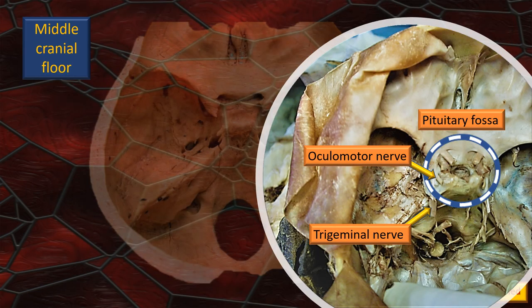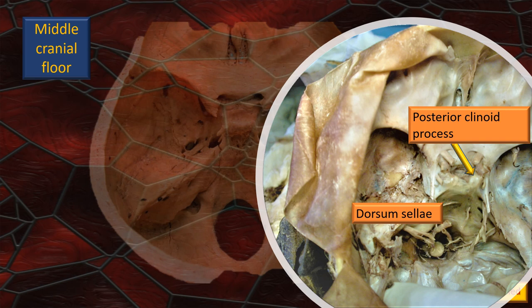Moving from dry bone, let's look at an actual wet specimen where the calvarium has been removed, the brain removed, and we are looking at the floor of the cranial fossa with the dural carpet still intact. A flap of dura has been folded and kept aside. The dotted circle again points to the pituitary fossa. Since this is not a dry skull, you can see the oculomotor nerve and the trigeminal nerve — the flashing arrow is the trigeminal nerve, the static arrow is the oculomotor nerve, very well seen in this specimen.